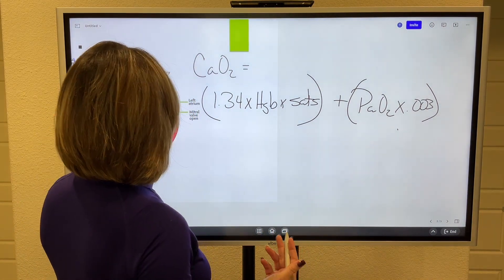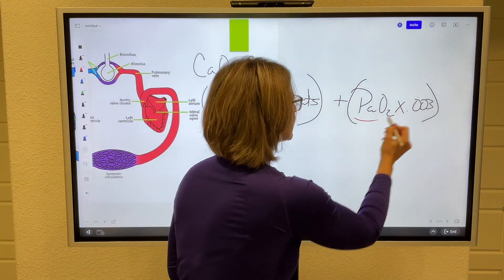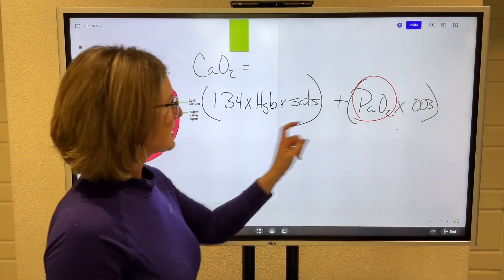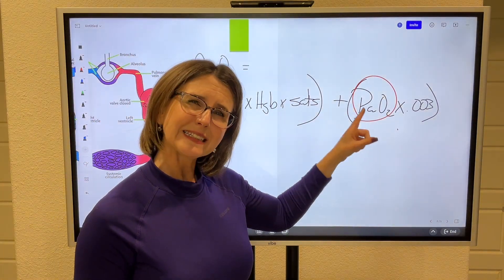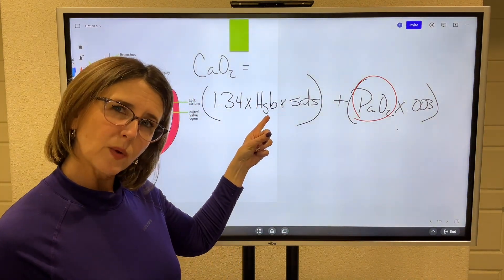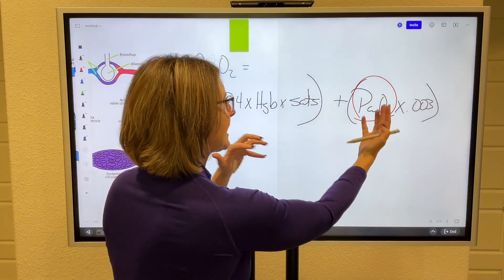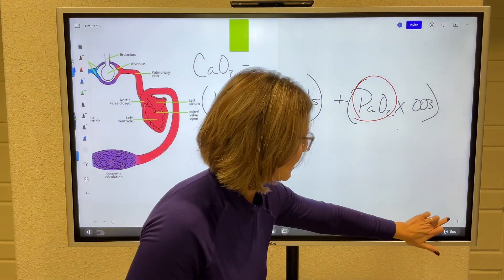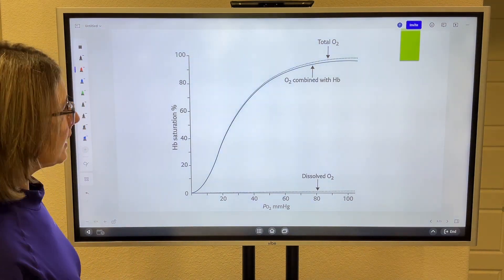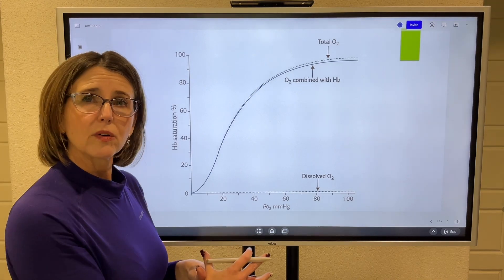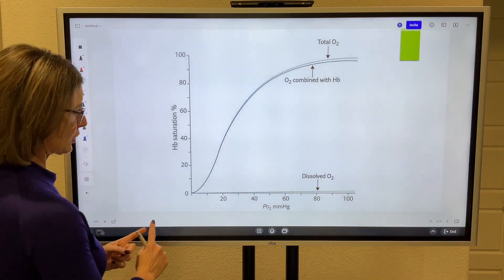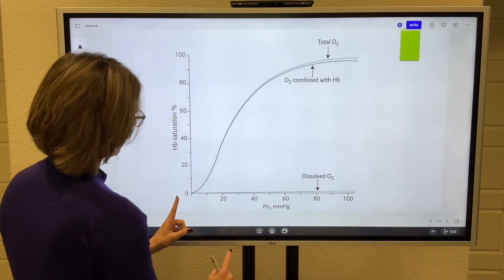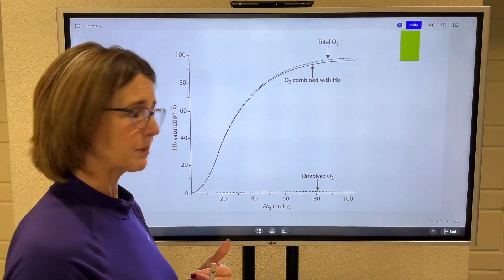Yet we draw blood gases all the time and look at the PaO2, which I just told you doesn't matter on its own. What matters is what's bound to hemoglobin. So the question is, how can we use the PaO2? It has to correlate with oxygen saturations. The correlation between the PaO2 and the saturations is the oxygen hemoglobin dissociation curve — it's simply the relationship between what's dissolved in plasma on the x-axis and what's bound to hemoglobin.